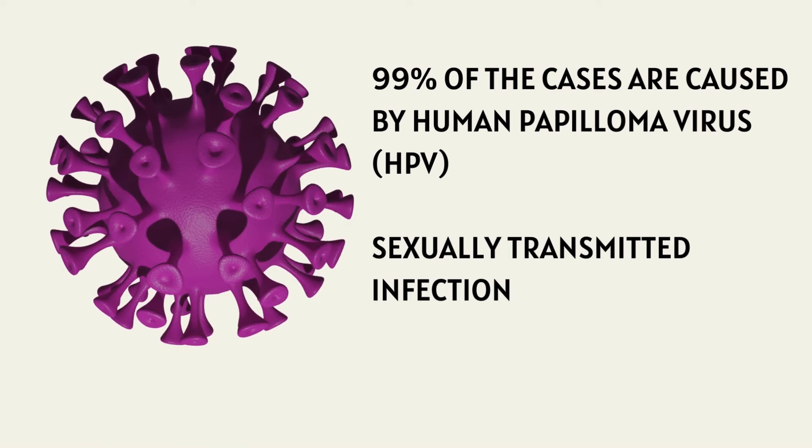There are more than 150 strains of HPV and at least 12 high-risk strains, but only two types — type 16 and type 18 — cause the majority of HPV-related cancers, including those involving the cervix, vagina, vulva, penis, and anus. High-risk HPV strains can also lead to cancers of the throat, tongue, and tonsils, known as oropharyngeal cancer.